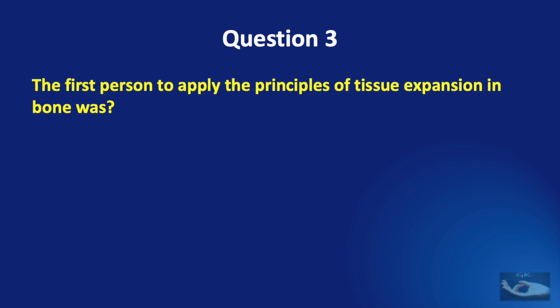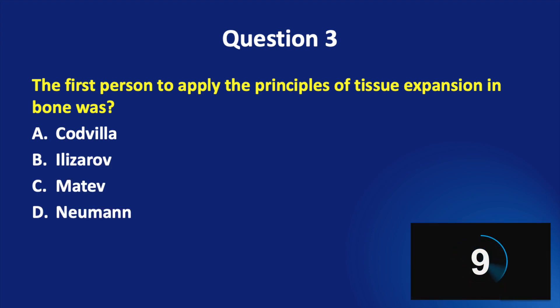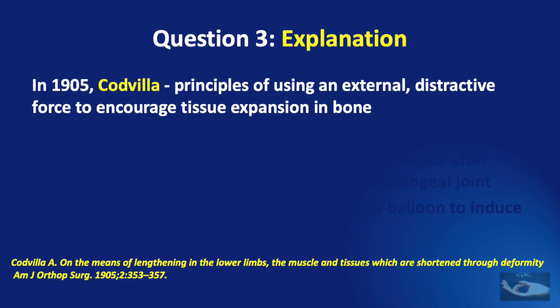Question number 3. The first person to apply the principles of tissue expansion in bone was — the correct answer is Codvilla. In 1905, Codvilla applied the principles of using an external distractive force to encourage tissue expansion in bone.